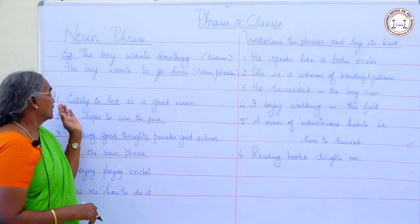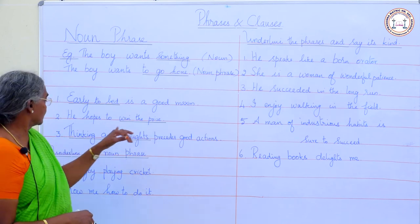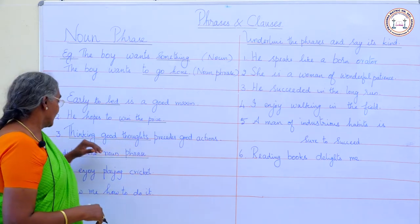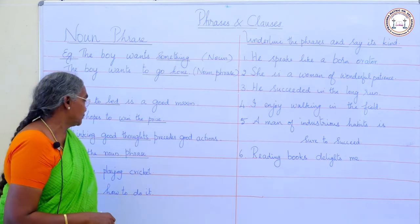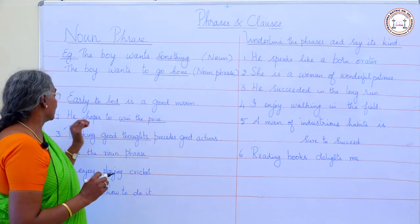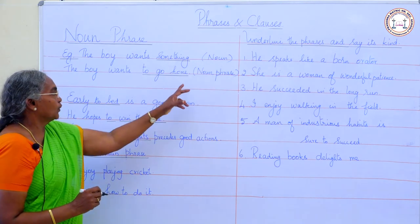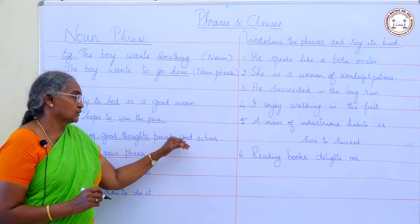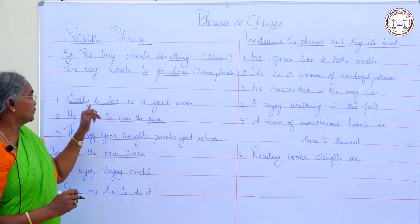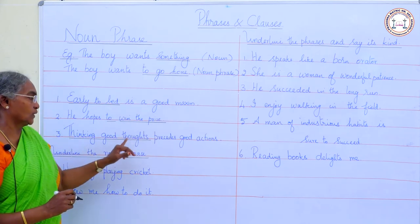I shall give you some more examples. 'Early to bed is a good maxim.' 'He hopes to win the prize.' 'Thinking good thoughts precedes good actions.' In these sentences, 'early to bed' is the noun phrase, 'to win the prize' is the noun phrase, and 'thinking good thoughts' is the noun phrase.